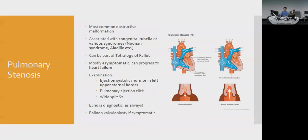Pulmonary stenosis is common and associated with Noonan syndrome, Alagille syndrome, and congenital rubella, and is also part of tetralogy of Fallot. It presents similarly to adults — ejection systolic murmur at the left upper sternal border (pulmonary area). Generally asymptomatic but can progress to heart failure. Echo is diagnostic; balloon valvuloplasty is used if needed.